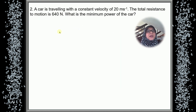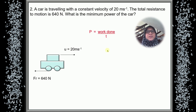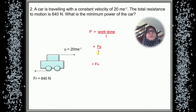Question 2: A car is travelling with a constant velocity of 20 meters per second. The total resistance to motion is 640 N. What is the minimum power of the car? The car travels at an initial velocity of 20 m/s, so the frictional force is 640 N in the opposite direction of motion. For power, we use work done divided by time taken. The work done is frictional force times distance divided by time. Distance is not given, but we can use S over T as velocity, which is 20 m/s. So 640 times 20 gives 12,800 watts.